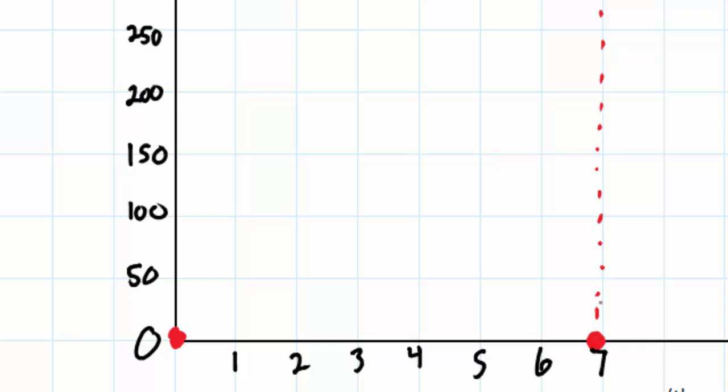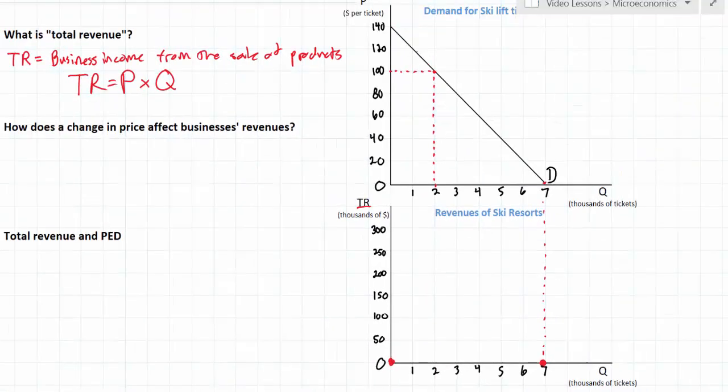What we want to know is how do the businesses' total revenues change as price falls from $140 down to $0. To do that we just need to do some simple calculations. So let's start at $140 and lower the price to $120 and determine what happens to the revenues of ski resorts as the price falls.